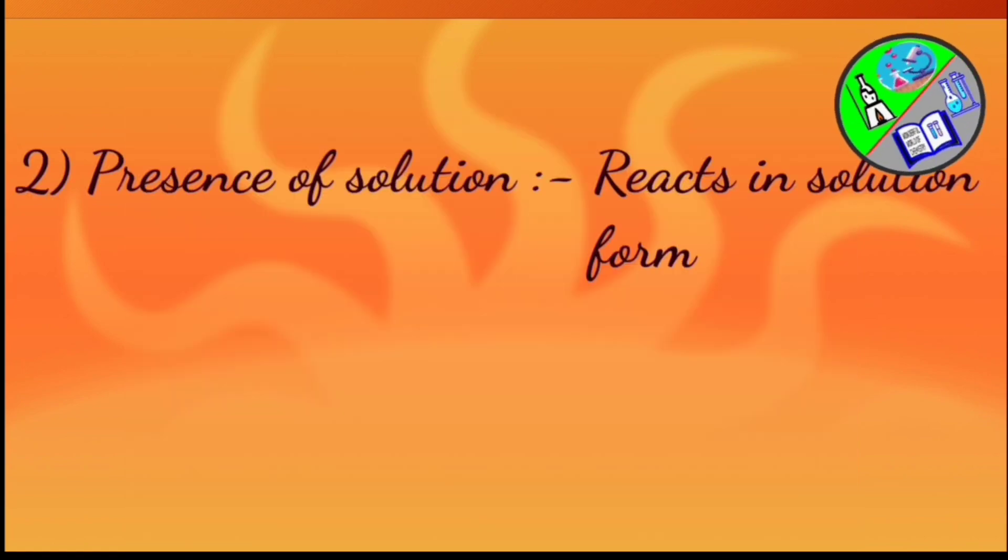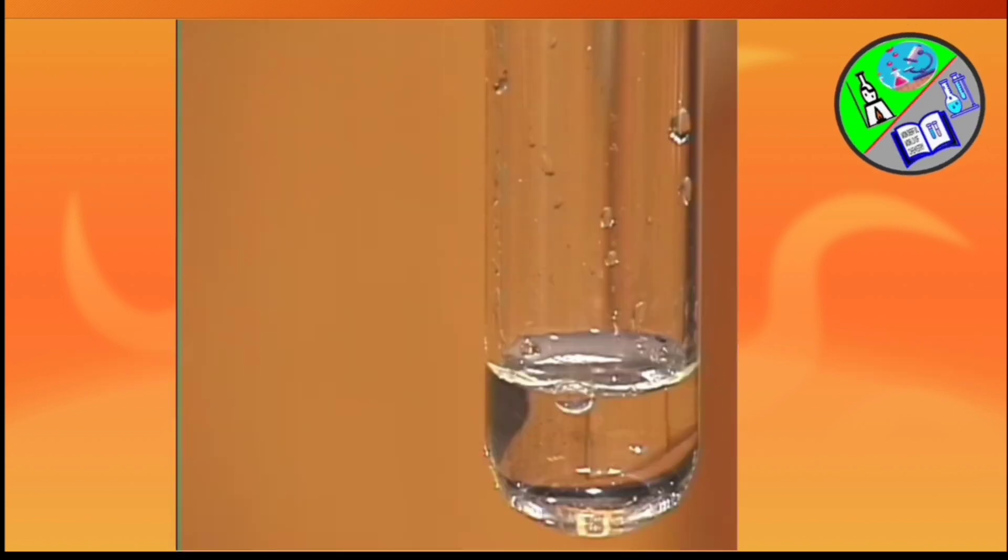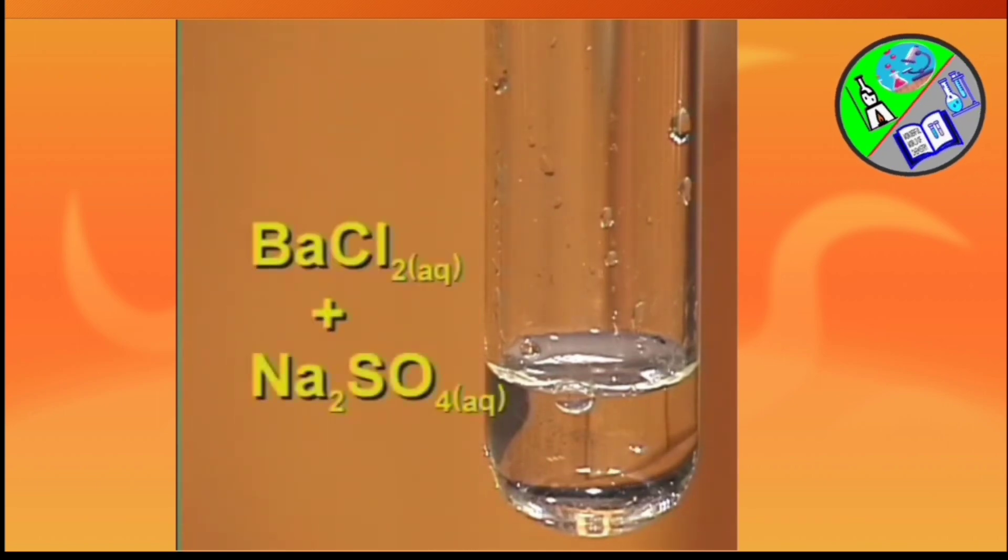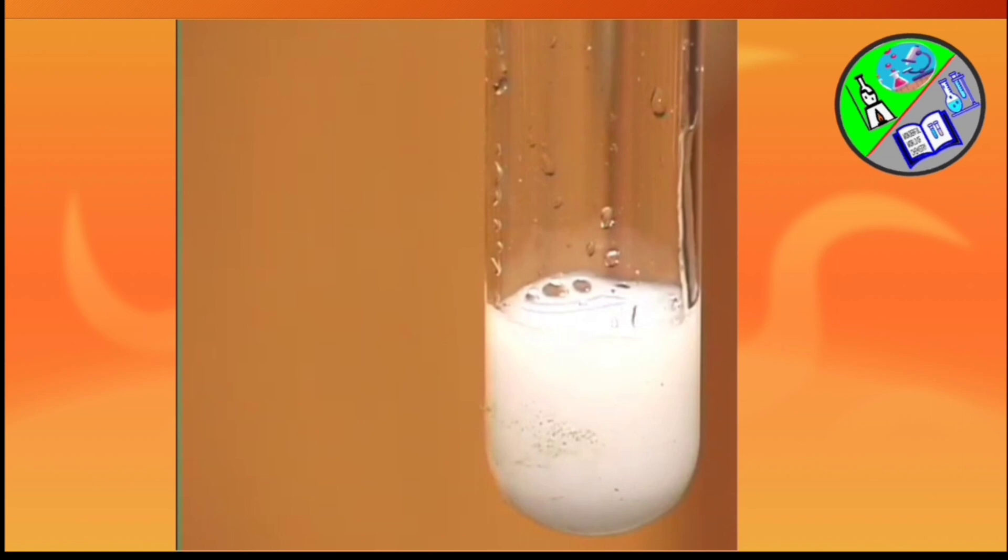Second is presence of solution. Some chemical reactions take place only when the reactants are mixed in solution form. When sodium sulphate and barium chloride are mixed, a white precipitate of barium sulphate is formed along with sodium chloride. Here in this experiment we can see aqueous solution of sodium sulphate and barium chloride is taken and mixed. A white precipitate of barium sulphate is formed.